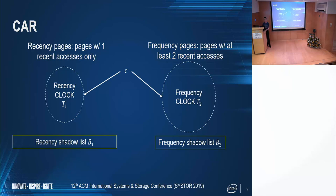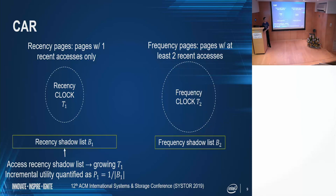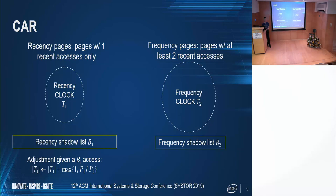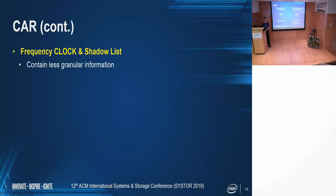In CAR, we maintain the same number of cache entries, shadow entries, frequency entries, and recency entries. When there is an access in the recency shadow list, growing the recency clock size by one is likely to convert the miss into a hit; we calculate the probability as the incremental utility. When there is a miss on the frequency shadow list, growing the frequency clock size by one is likely to convert the miss into a hit; again, we calculate the probability as the incremental utility. We compare the two utilities and decide the exact size to grow — at minimum, by one. Similarly, we do the same thing for the frequency clock.